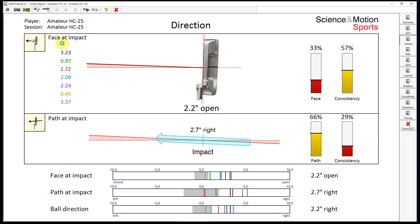The first and most important aspect for the direction is face angle at impact. For this 25 handicapper, the average face angle at impact is 2.2 degrees open to the right.